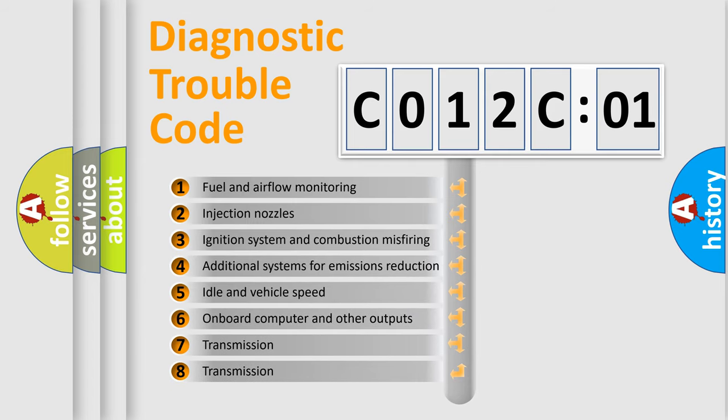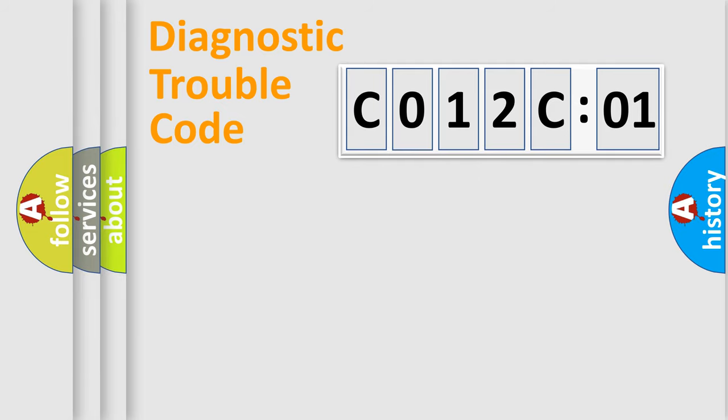The third character specifies a subset of errors. The distribution shown is valid only for the standardized DTC code. Only the last two characters define the specific fault of the group.